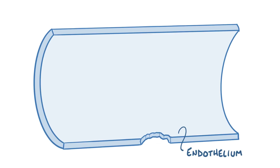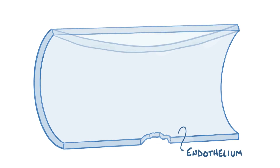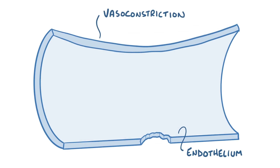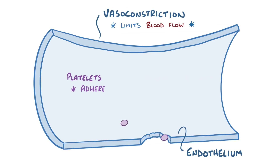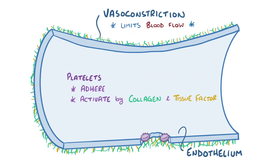Normally the process starts with damage to the endothelium, or inner lining of the blood vessel walls, after which there's an immediate vasoconstriction or narrowing of the blood vessel, which limits the amount of blood flow. After that, some platelets adhere to the damaged vessel wall and become activated by collagen and tissue factor, which are proteins that are normally kept separated from the blood by an intact endothelium.